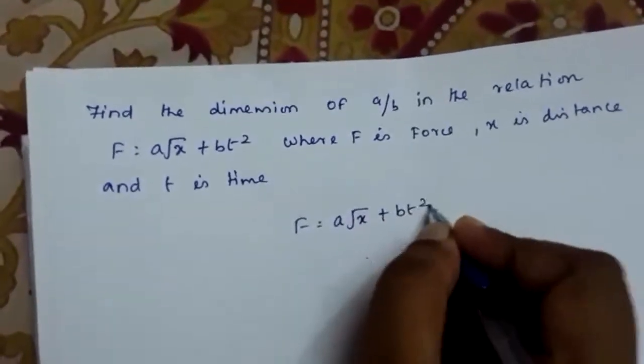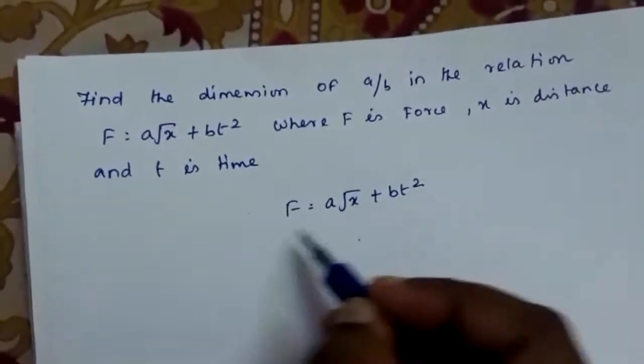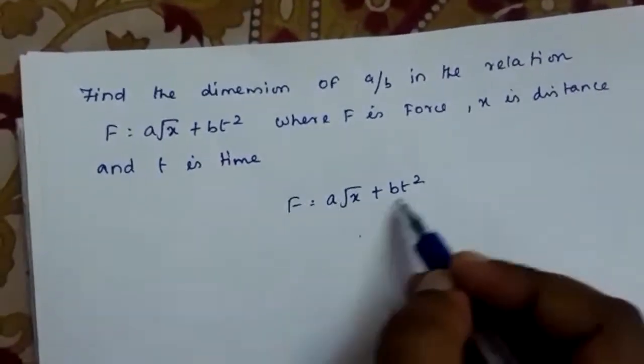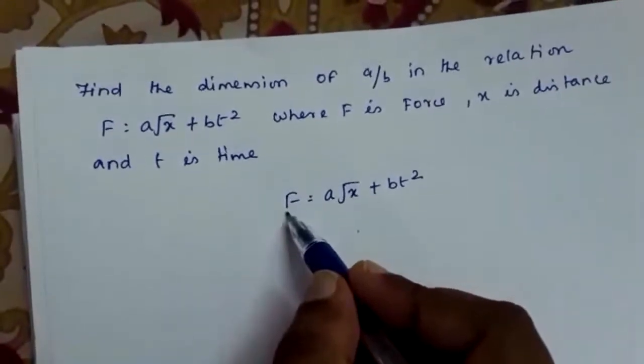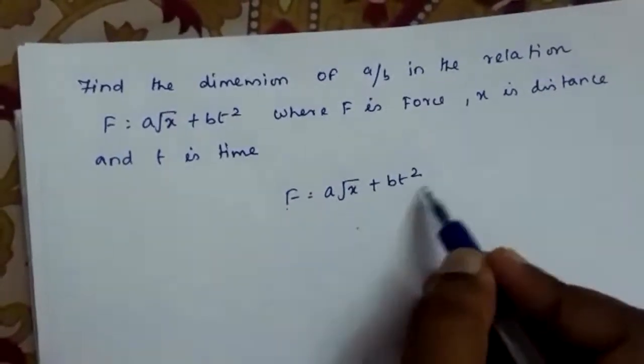Now according to the principle of homogeneity, all the terms in the equation can have the same dimension. So F will have the same dimension as a√x and also bt².